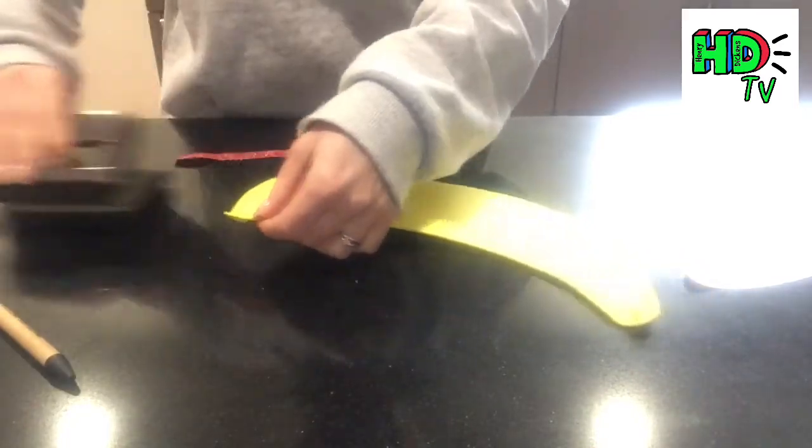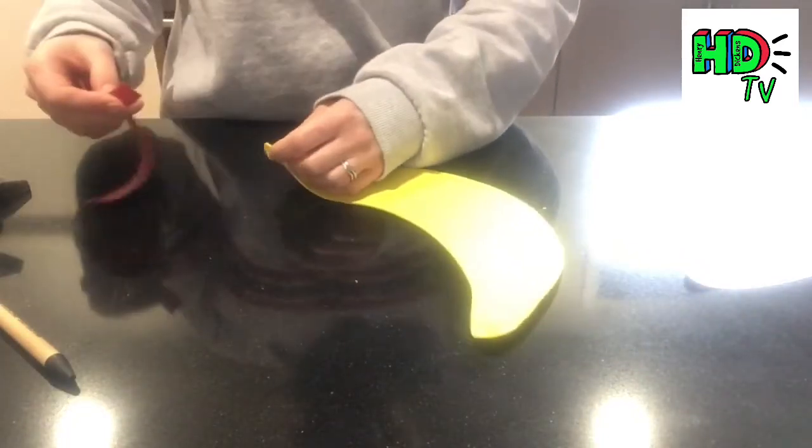Once you've got your hole like this, you're then going to thread your elastic through and tie a knot.